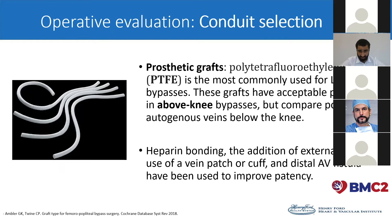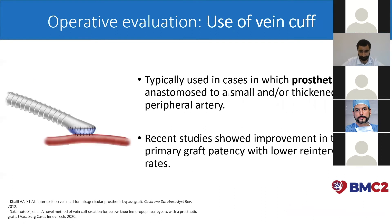The most common prosthetic graft used is polytetrafluoroethylene, or the PTFE graft. It has been shown to have acceptable midterm patency for above-the-knee bypasses. However, it compares poorly to autogenous veins for below-the-knee bypasses. Heparin bonding, addition of external rings, use of vein patch cuff, and distal AV fistula have been used to improve patency of prosthetic grafts. The most commonly used is the vein cuff, which as you can see in the illustration, is a vein that links the prosthetic graft with the outflow artery. It is usually used for small or thickened peripheral arteries and has been shown to improve primary graft patency with lower reintervention rates.